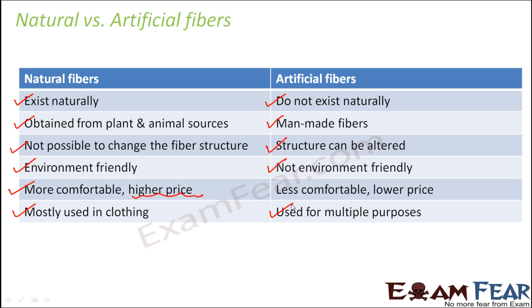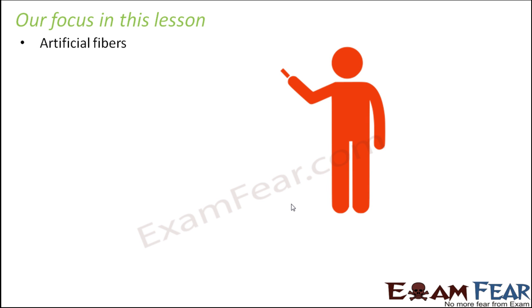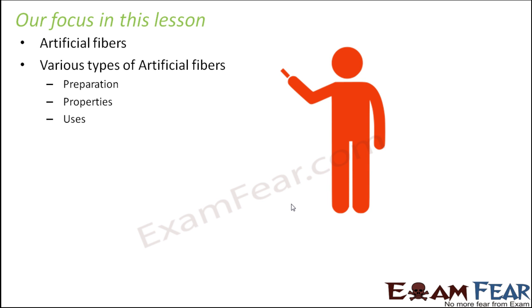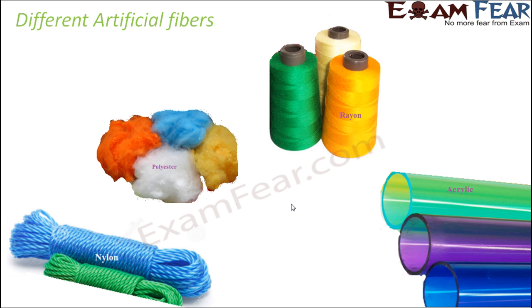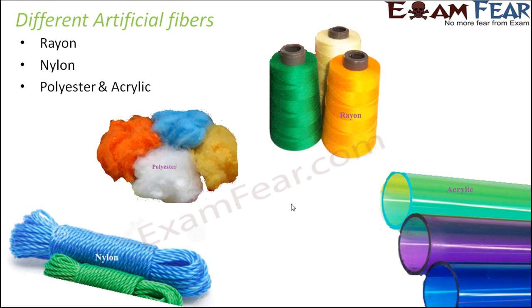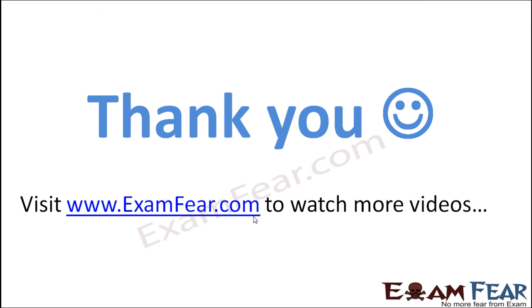In this lesson, we are going to focus more on synthetic fibers — artificial fibers. We will discuss different types of artificial fibers, how they are prepared, what their properties are, and where they are used. The types we will cover are rayon, nylon, polyester, and acrylic. We are going to discuss each of these artificial fibers in more detail.